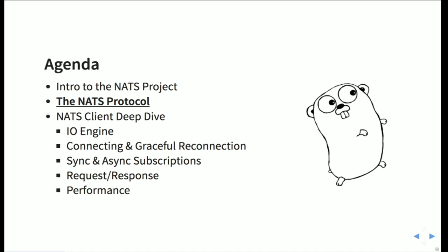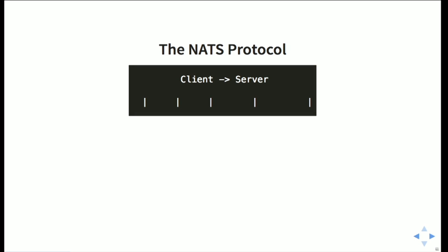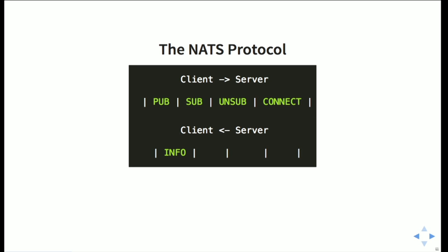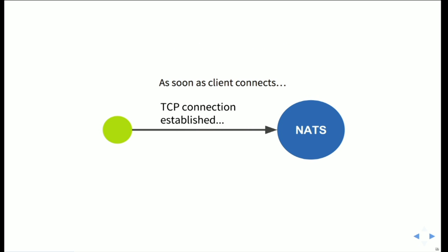The NATS protocol has very few commands. From the client to the server, we can publish messages, subscribe, unsubscribe, or connect. From the server, we can receive info strings with metadata about how to handle the connection, receive messages, receive errors, or an OK to confirm a command was processed. There's also a mutual ping/pong interval happening to keep the connection alive.